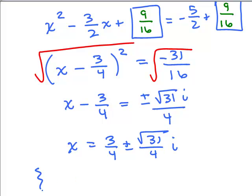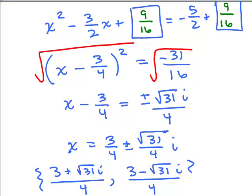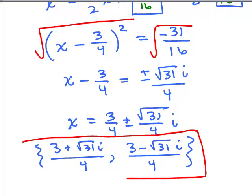So my final answer is 3 fourths plus square root of 31 over 4i and 3 fourths minus square root of 31 over 4i, or you could write it as a single fraction. 3 plus square root of 31i all over 4, and 3 minus square root of 31i all over 4. And there, there we have it.